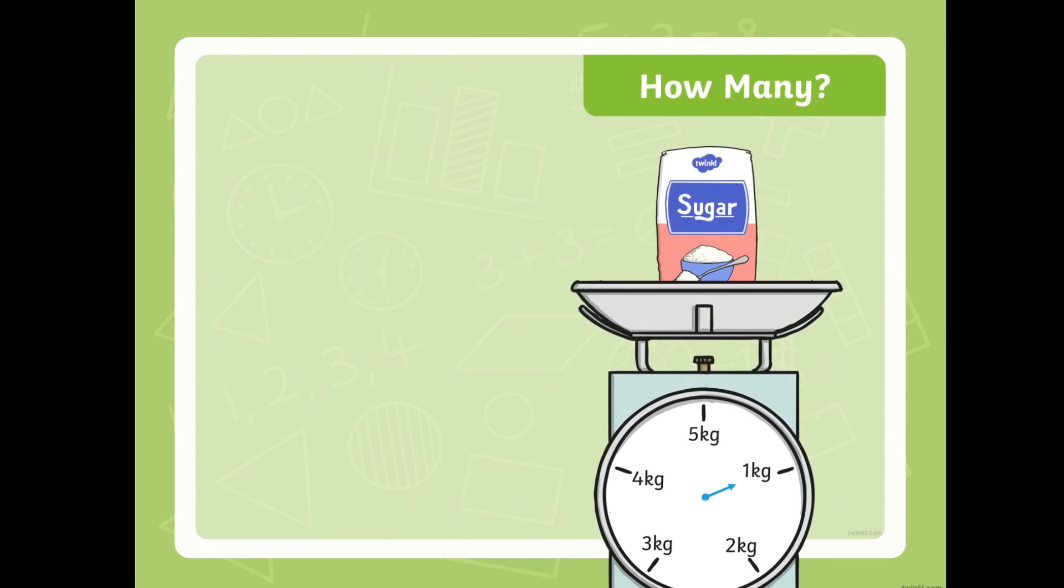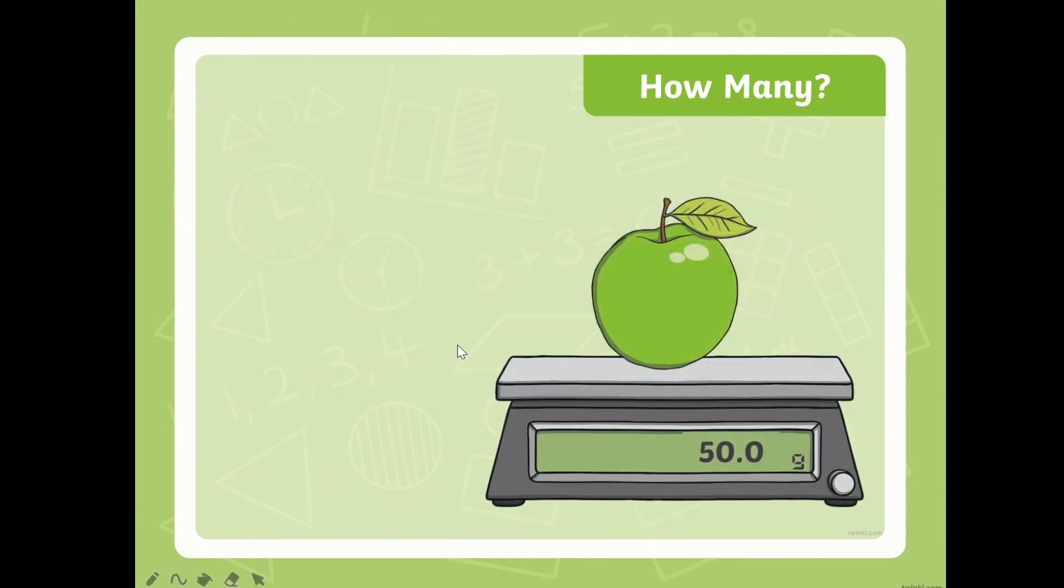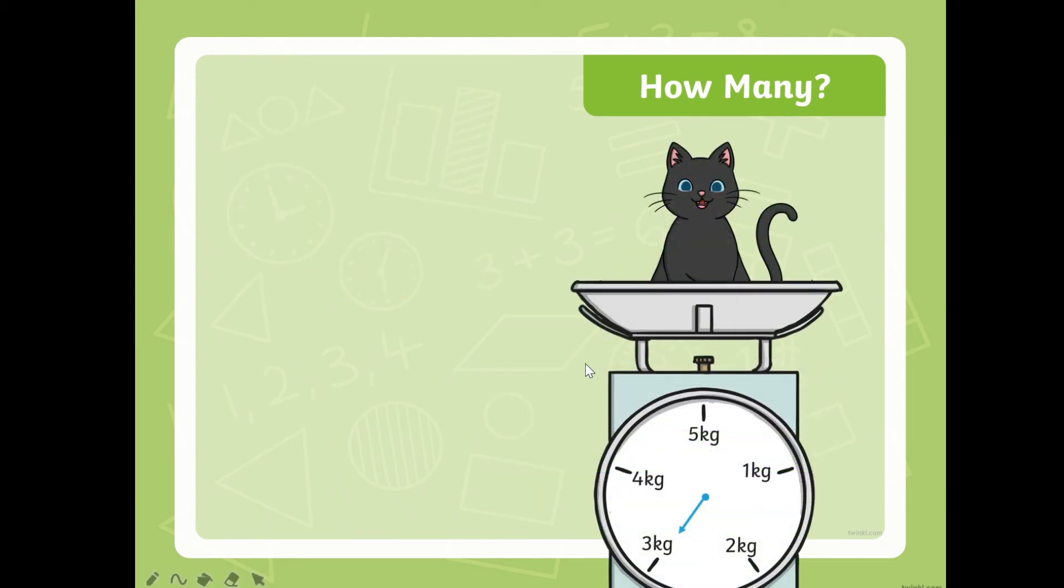How about this sugar? Now this time we're going to learn how to use a weighing scale. Just like what I've said, there is a hand in which it points to the weight of the object that you put on top of it. How heavy is this sugar? It points to one so it's one kilogram. Next look, this is a digital weighing scale and you can see the number right here. Can you tell me now the weight of this apple? It's 50 grams.